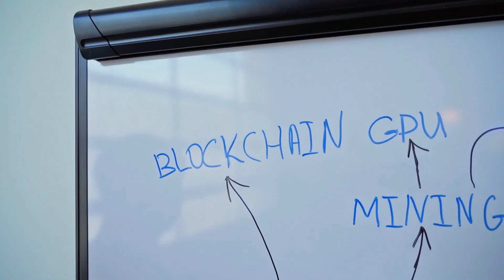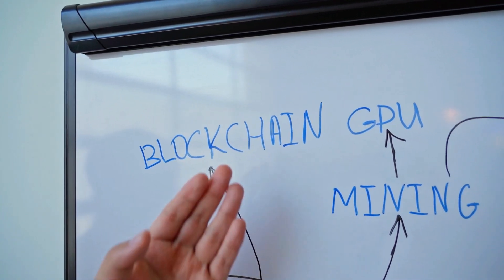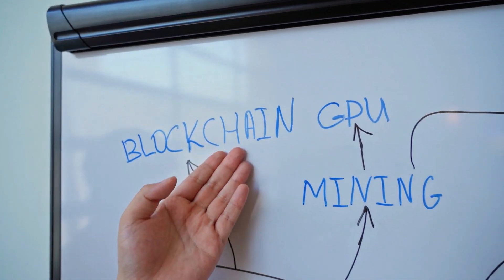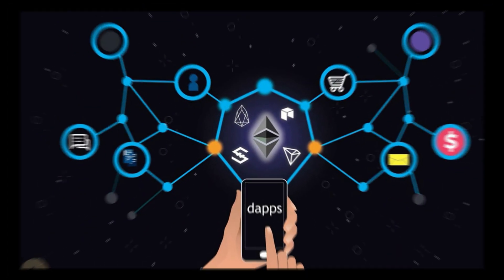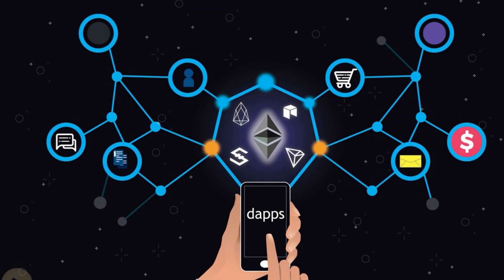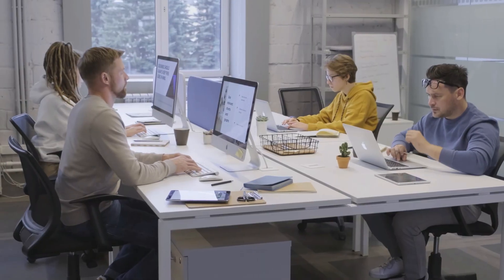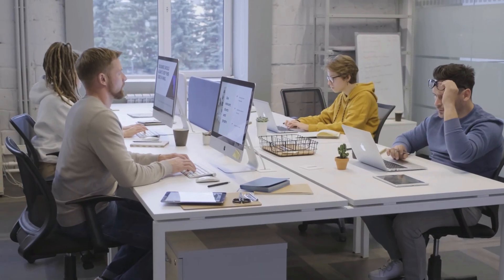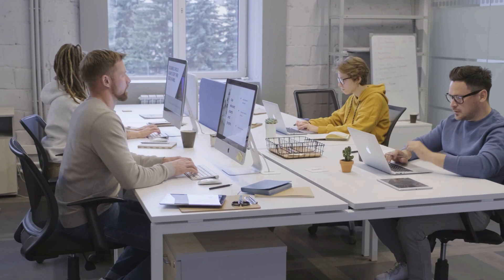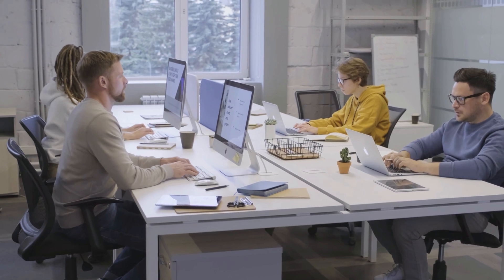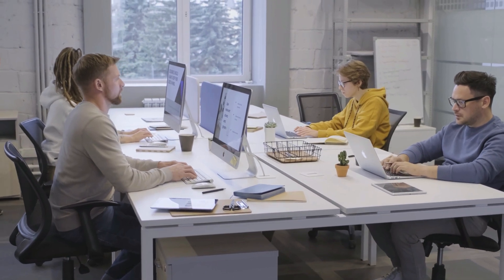The Decentralized Web is characterized by the use of blockchain technology, which enables the creation of decentralized applications, dApps, that operate on a peer-to-peer network. In this video, we will explore the potential impact of Web 3 on education and how it can transform the way we learn.